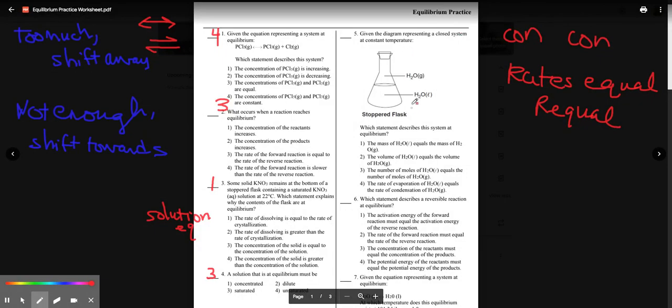We have a stoppered flask, which is good because you need to have a closed system. If this was open, gas could escape, and it would no longer be at equilibrium. So the only way to maintain that gas staying inside is if you stopper it. Which statement describes the system at equilibrium? So this is phase equilibrium, when you've got the same substance in two different phases. You've got some water liquid and some water vapor. So at phase equilibrium, the rate of evaporation, liquid to gas, equals the rate of condensation, which is gas to liquid. That's what we want. The same speed of liquid going to gas is the same speed as gas going to liquid at equilibrium. So that's why it is choice four.